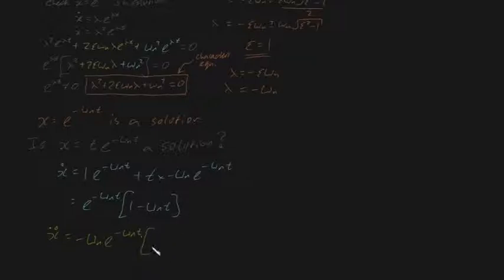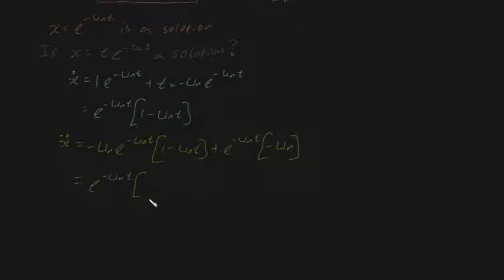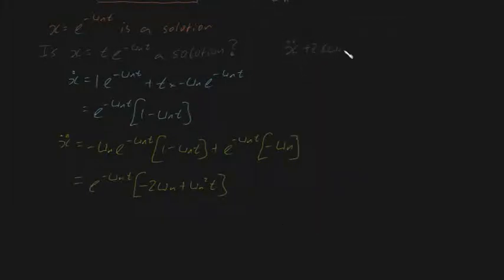Let's differentiate x dot again using the product rule. Differentiating the first factor gives minus omega n times e to the minus omega n t, times 1 minus omega n t, then leaving e to the minus omega n t and differentiating 1 minus omega n t gives minus omega n. Grouping the e to the minus omega n t terms, we get x double dot equals e to the minus omega n t times minus 2 omega n plus omega n squared t.